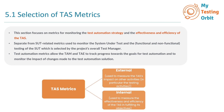There are two types of TAS metrics: external and internal. External TAS metrics are used to measure the TAS's impact on other activities, in particular the testing activities. Internal TAS metrics are used to measure the effectiveness and efficiency of the TAS in fulfilling its objectives. Think of it this way: external metrics show how your TAS affects the bigger picture of testing, while internal metrics tell you how well the TAS is doing its job — it's like looking at both the forest and the trees.